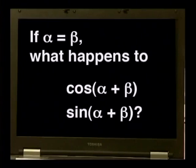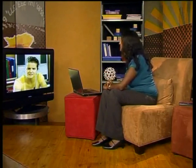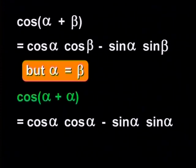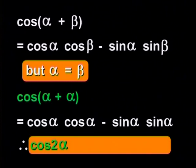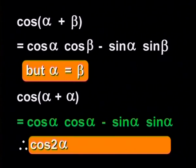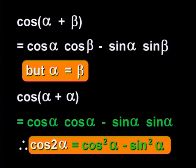Now try doing the same in the formula for cosine alpha plus beta. Watch out though — there are three possible answers in this case which all look different but actually are all the same. Three answers? That sounds pretty odd, but I think I'll have a go. If alpha equals beta, cosine alpha plus beta becomes cosine two alpha, and that will equal cosine squared alpha minus sine squared alpha.